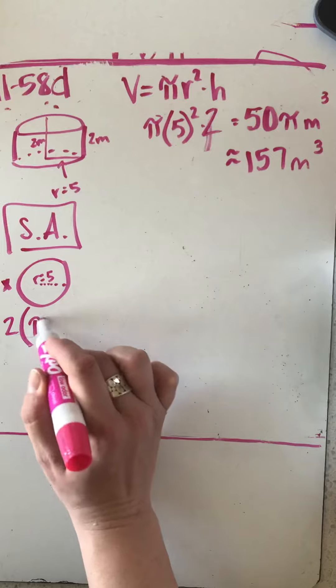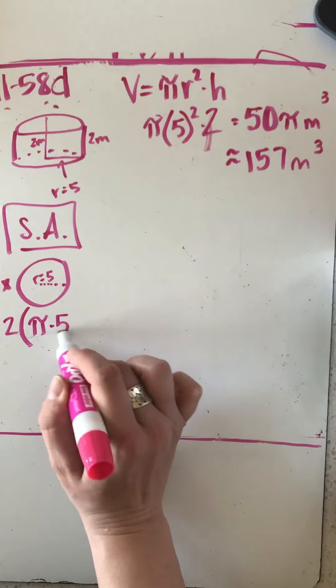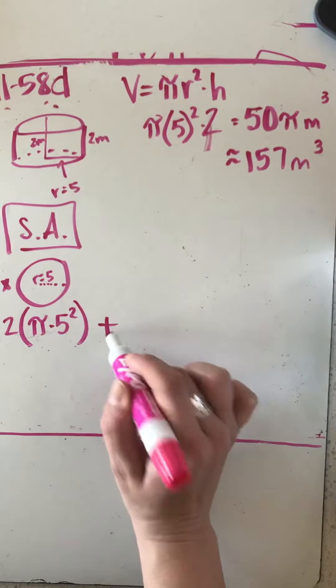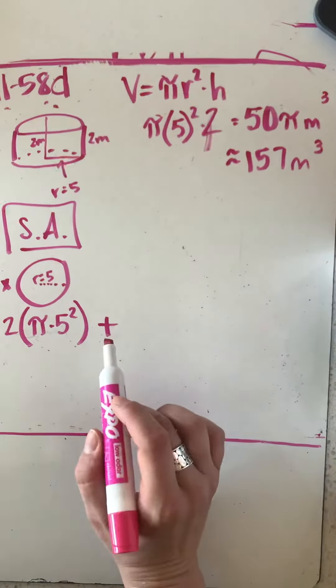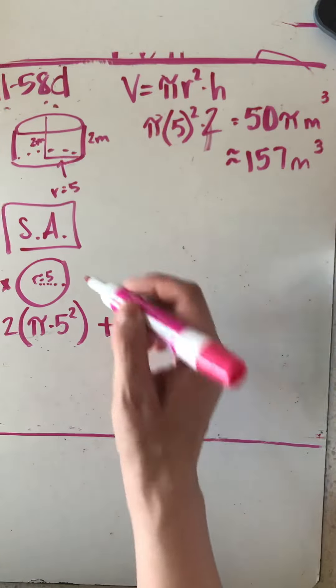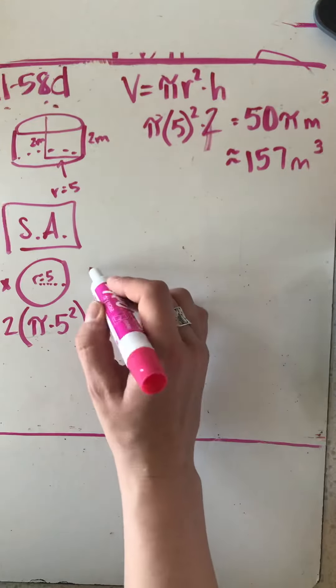Remember, if I spread out the cylinder and flatten the lateral surface area, it's like taking the label off of a soup can and flattening it.